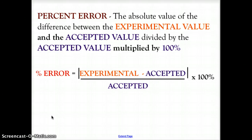Multiplying by 100 is the same as moving the decimal two places to the right. So think of it this way: experimental minus accepted, divided by accepted, then move the decimal two to the right.